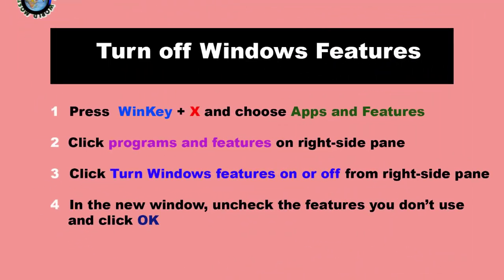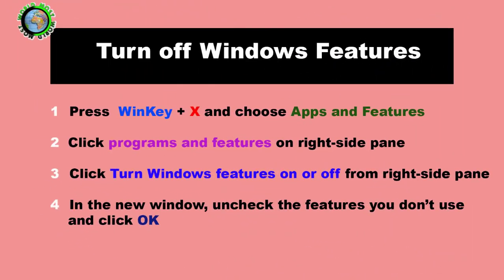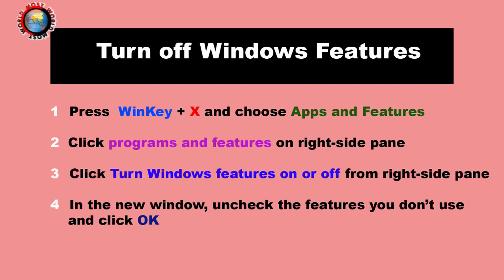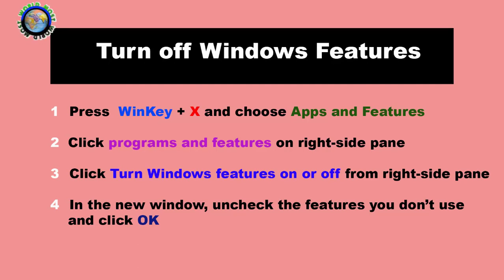Windows has many optional features such as .NET, PowerShell, Telnet and many more, which may or may not be useful to you, and occupy memory and disk space. Owing to this, if there are Windows features that you don't use, then turn them off to make Windows 10 speedier.